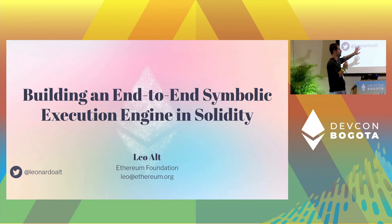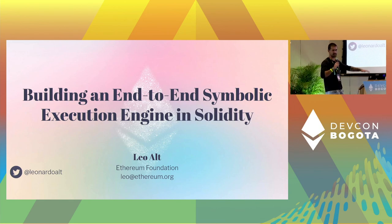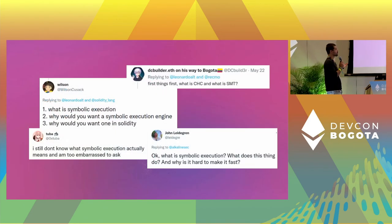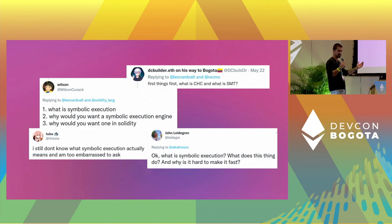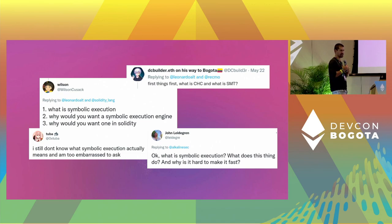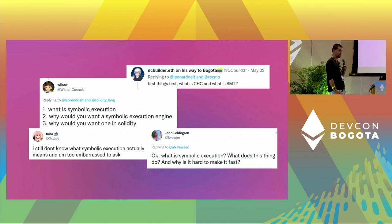I'm quickly going to go over some slides, and then we're going to move to code. These expressions are thrown around a lot — symbolic execution, constraints, SMT solver. A lot of people know what they mean, but if you don't, you feel left out. They're simple, but not trivial.